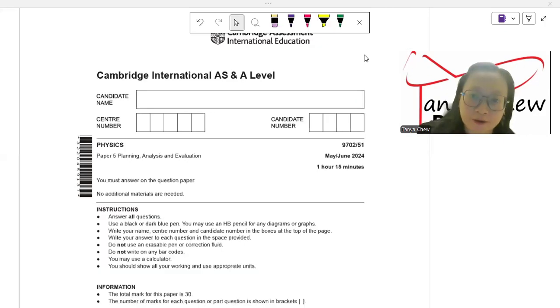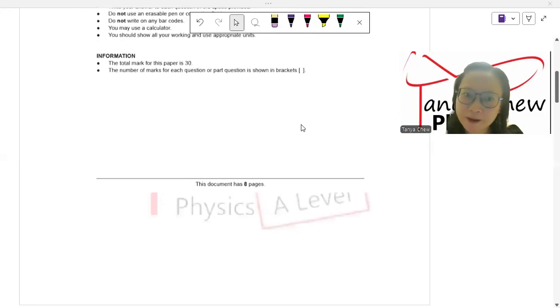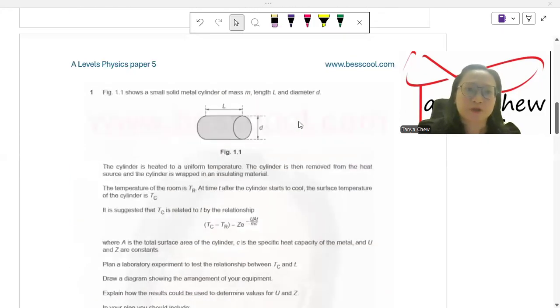Cambridge International A-Level, May June 2024, paper 51. Question number one is the one that I'm going to discuss today. It is about planning experiment question. Now, let us dive into the question right away.